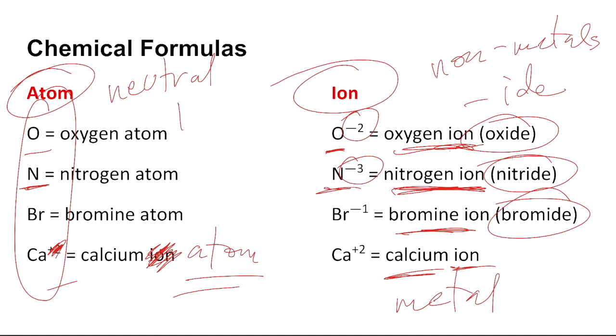Ions, on the other hand, will not have equal numbers. So either your protons will be greater than the electrons, or the protons will be less than the electrons. But be aware that the protons never change. The only thing that can change are the electrons that circle around in orbit around the nucleus.